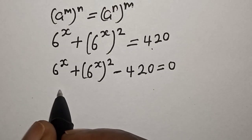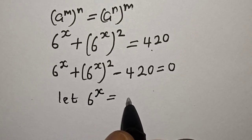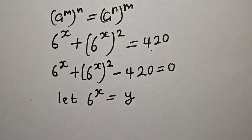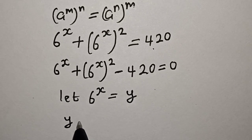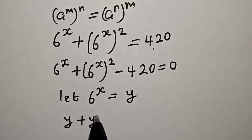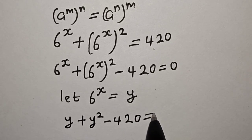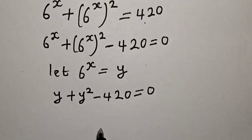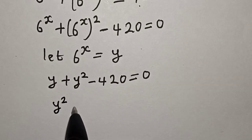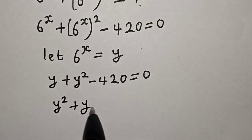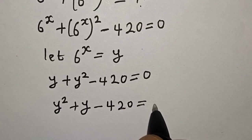Now, let 6 raised to power s be equal to y. Substituting, we have y plus y squared minus 420 is equal to 0. Rearranging, we get y squared plus y minus 420 is equal to 0.